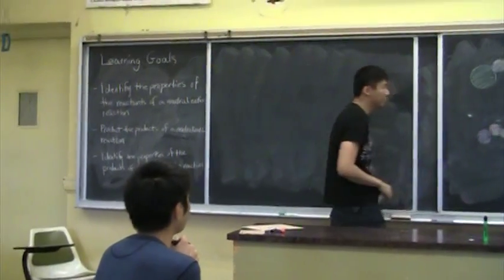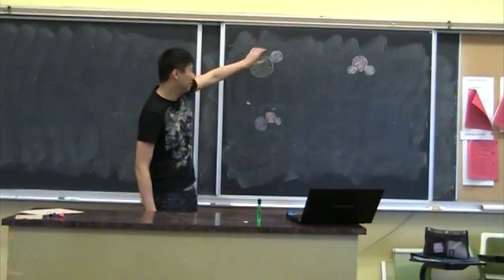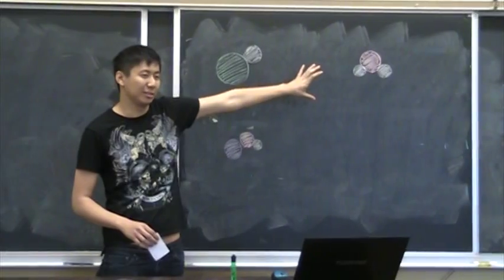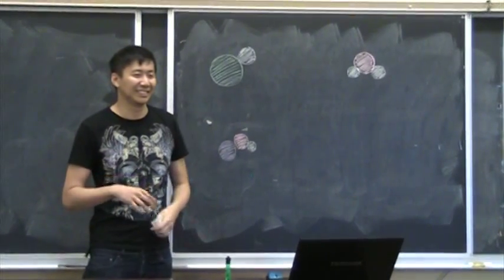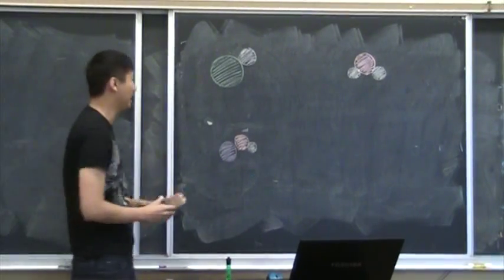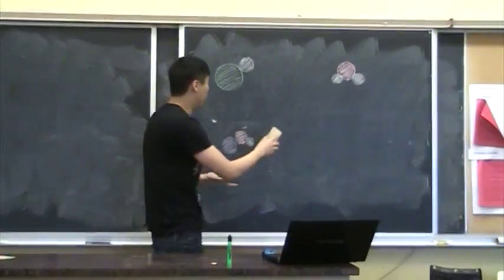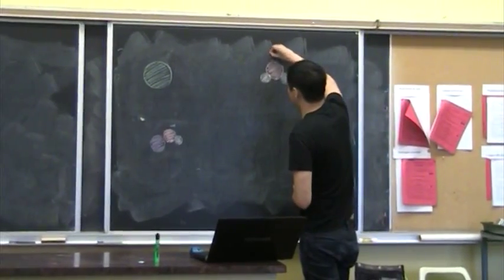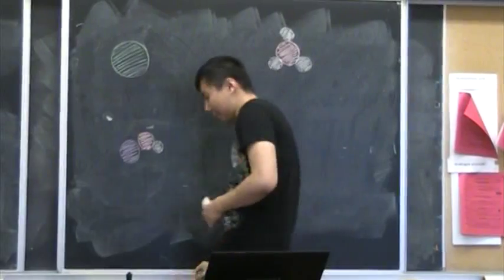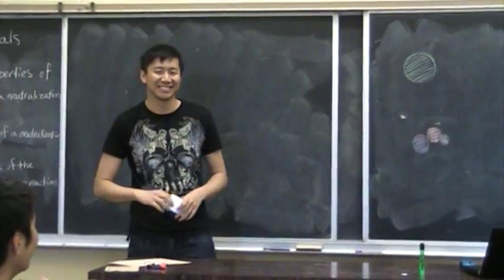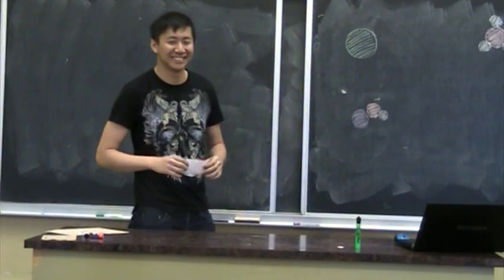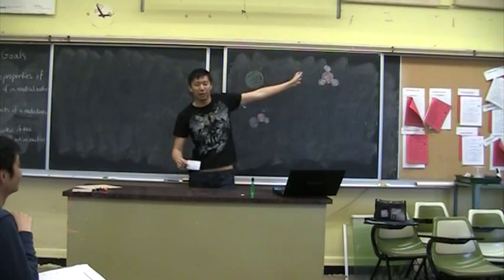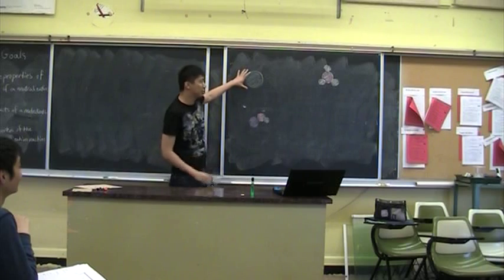Now, here on the board I have hydrochloric acid — the green is chlorine, white is hydrogen — and we have water. Can anyone tell me what happens to hydrochloric acid when it is dissolved in water? If you remember from yesterday, the hydrogen atom will dissociate from the chlorine in water and form a hydronium ion. pH measures the concentration of hydronium ions. The higher the concentration, the lower the pH, and the more acidic the solution becomes. That is why hydrochloric acid is an acid.